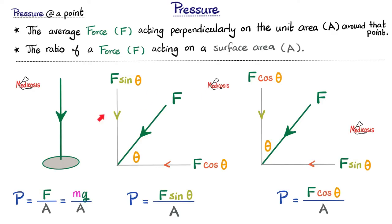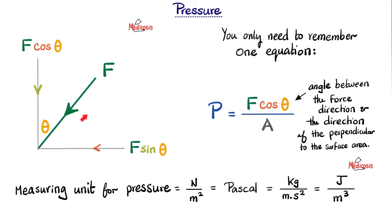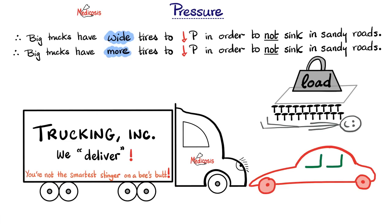Since doctors, nurses, pharmacists, dentists, paramedics, and lab scientists tend to struggle with physics, we'll ignore the angle and focus on force and area only. Though the angle can make you or break you — for example, wiping a window with a towel is unlikely to break the glass, but one punch can shatter it. To learn more, check out my physics playlist. Why do big trucks have wide tires? Because increasing the surface area decreases the pressure, so the truck does not sink in the sand. Big trucks also have more tires — more surface area equals lower pressure.